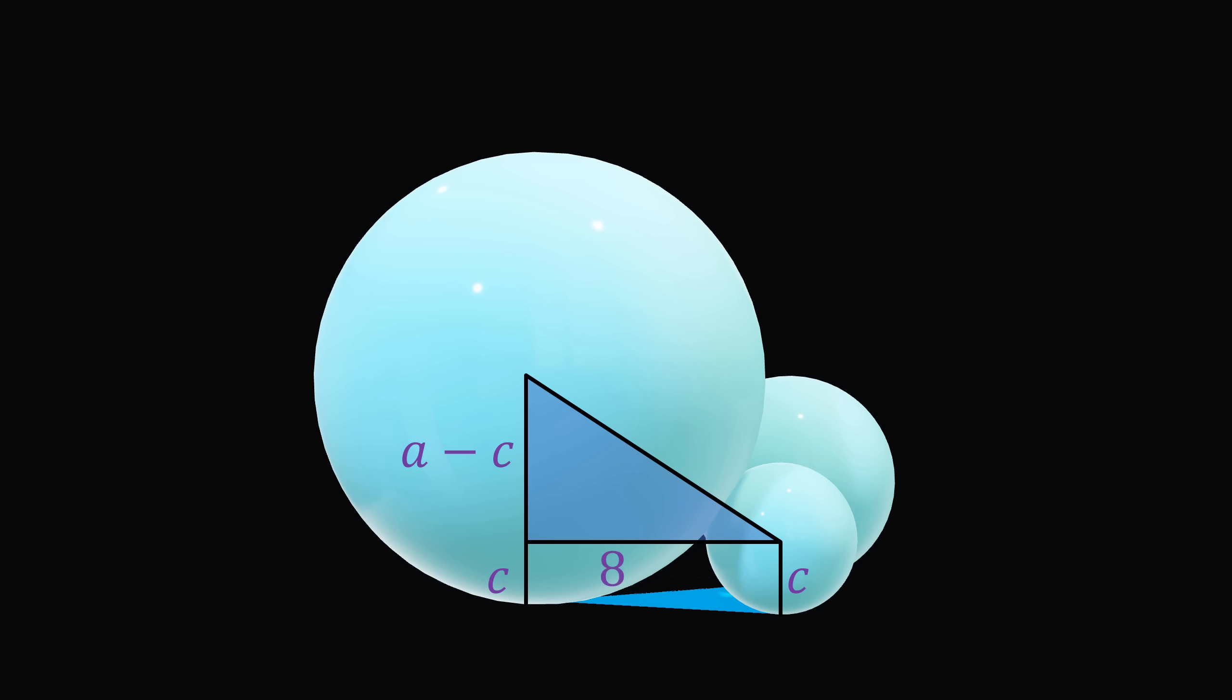So we have the legs of this triangle are a minus c, 8 because the triangle in the plane is 6, 8, 10, and the hypotenuse is the sum of the radii a plus c. We thus have the equation 8 squared plus the quantity a minus c squared is equal to the quantity a plus c squared.